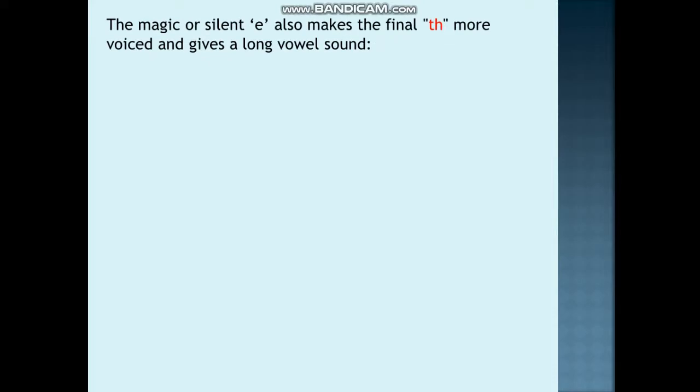Now, the magic E also makes the final TH sound more voiced. Ab yahan par ek example dikhate hain. Ye hai 'breath' - TH. Idhar aap kaise bol rahe hain - th, th - aapke muh se awaz aa raha hai. Lekin aap ye 'breathe', breathe - E kya kar raha hai? Ye TH ka sound bhi change kar raha hai. To TH, ye awaz aapke gale se aa raha hai. Breath, breathe. Try karke dekhiye, aapke gale mein haath lagaye.